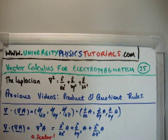The previous video to this are the quotient and product rules. I did quite a few videos on those. So how do we get the Laplacian? If we start with the gradient of a vector field.